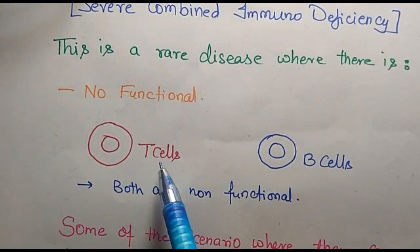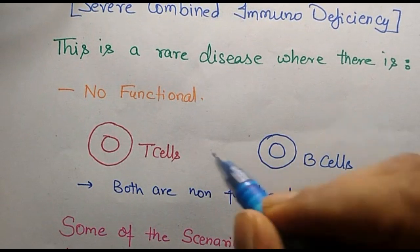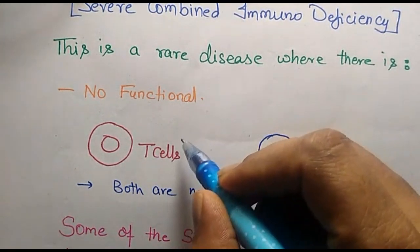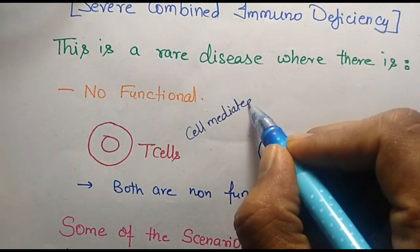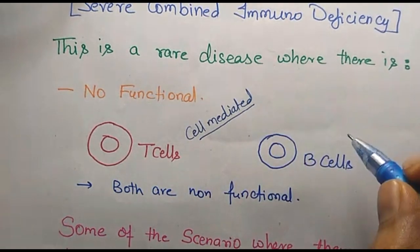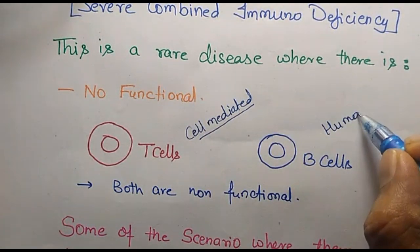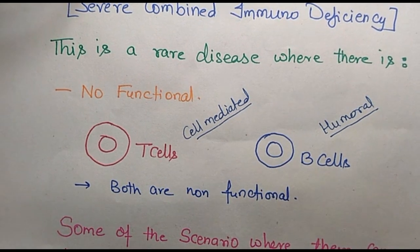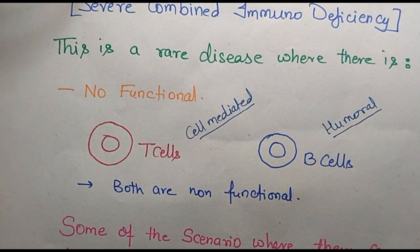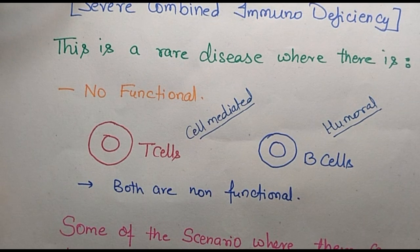What exactly happens in SCID is that there are no functional T and B cells in the individual. T cells are part of your cell-mediated immunity, whereas B cells are part of your humoral immunity. Because both these branches are not properly functioning, the newborn is highly susceptible to infections and tends to die within one or two years of birth.